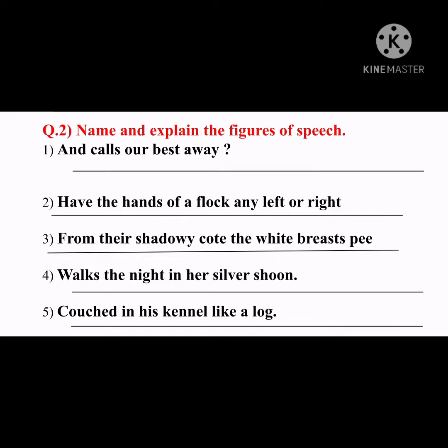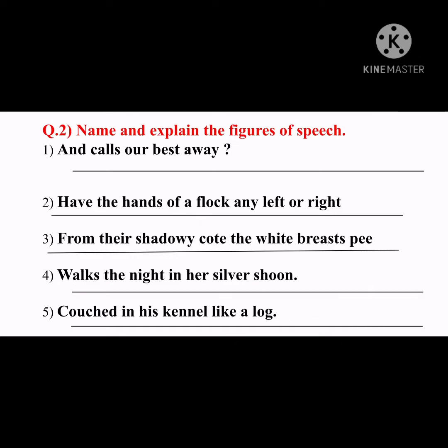Number four: 'Walks the night in a silver soon.' We know this line is from the poem about the moon. The moon is walking, so it is personification — the moon is given the human quality of walking. Number five: 'Couch in his candle like a log.' This is a simile — we can find the keyword 'like.' A log is a piece of wood, directly compared with a dog.